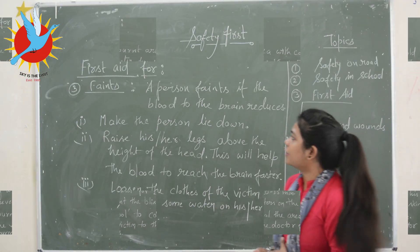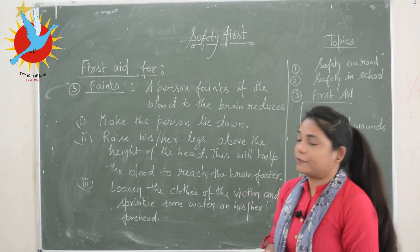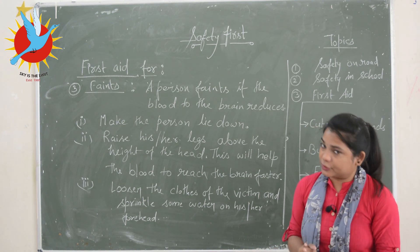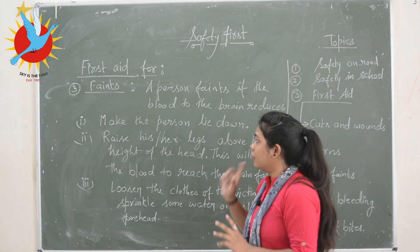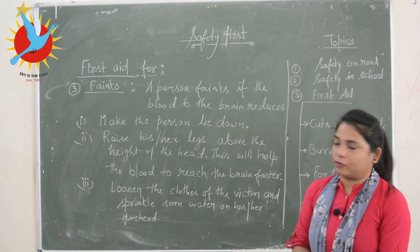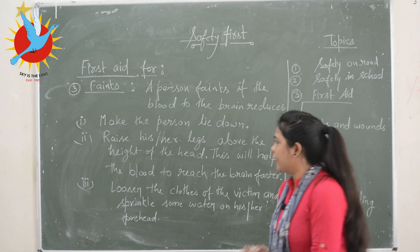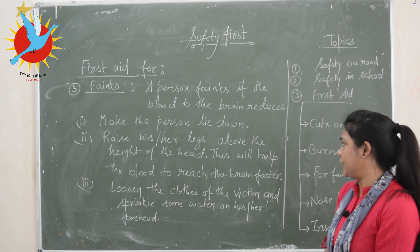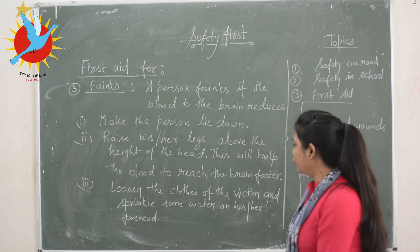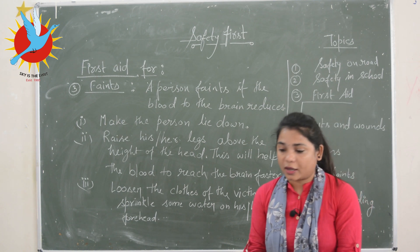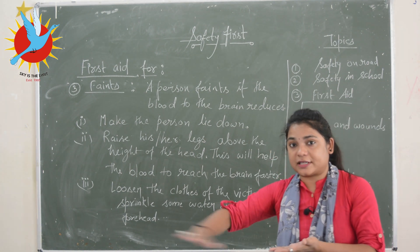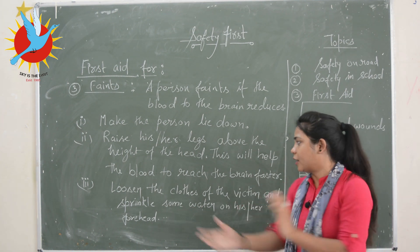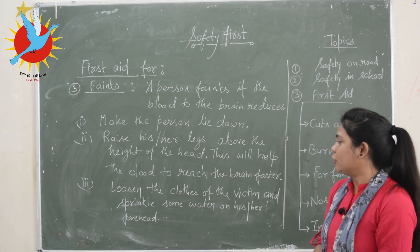First aid for fainting: a person faints when blood flow to the brain reduces. Step one — make the person lie down. Step two — raise his or her legs above the height of the head; this will help blood reach the brain faster and increase blood flow towards the brain.